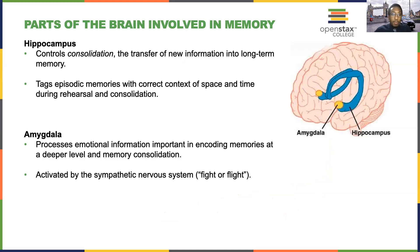The hippocampus is a brain structure that controls consolidation — the transfer of new information into long-term memory. One specific and very unique function of the hippocampus is that it tags episodic memories with the correct time and space information during rehearsal and consolidation.